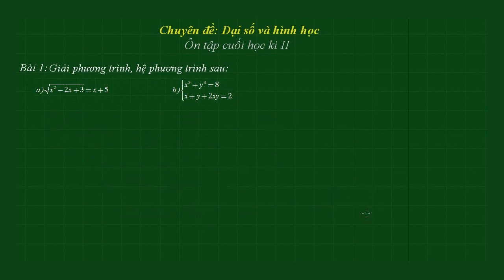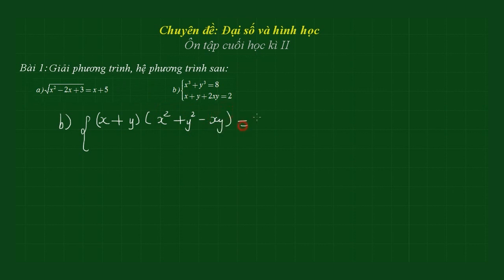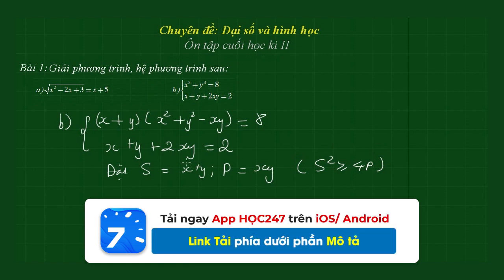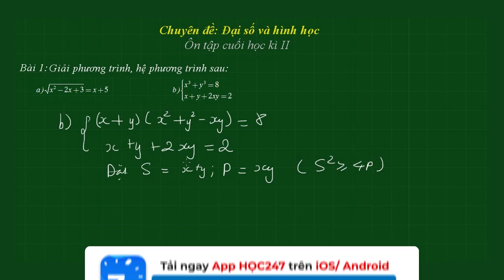Câu B: giải hệ phương trình. Câu B không cần đặt điều kiện. Khai triển: x³ + y³ = (x+y)(x² - xy + y²) = 8 và (x+y)² + 2xy = 2. Đặt S = x+y, P = xy với điều kiện S² ≥ 4P vì (x-y)² ≥ 0.